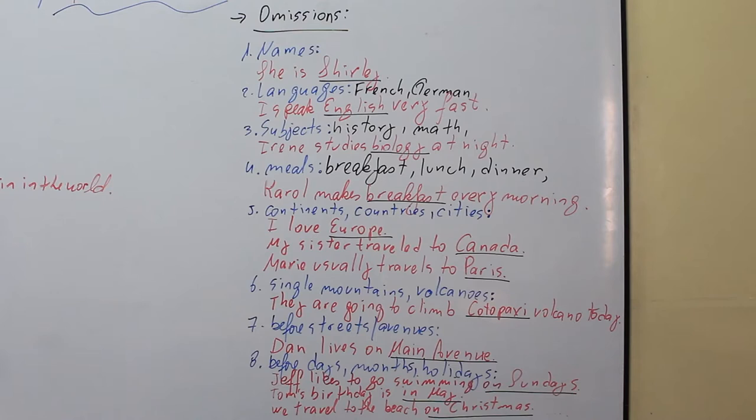Number five, the definite article is omitted before continents. I love Europe. Before countries, my sister travels to Canada, and before cities, Marie usually travels to Paris.